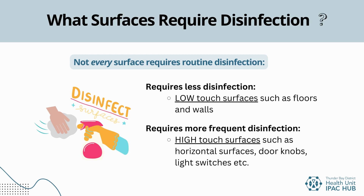High touch surfaces — those that come into contact with our hands often — are going to become contaminated more often with harmful microbes and require frequent disinfection as they pose a higher risk of transmission. High touch surfaces may include doorknobs, light switches, and many more. Most disinfectants are chemical in nature, which allows for quick effectiveness for surface cleaning. There are other options such as UV light or vapor application; however, for our purpose within congregate settings, we will focus on chemical disinfectants in this module.